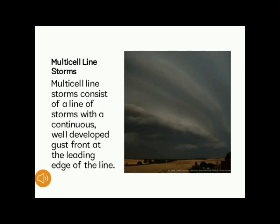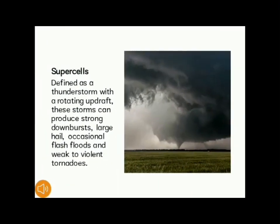Multi-cell line storm consists of a line of storms with a continuous well-developed gust front at the leading edge, also known as a squall line. This storm can produce small to moderate-sized hail, occasional flash floods, and weak tornadoes. The last type is a supercell, defined as a thunderstorm with a rotating updraft. This storm can produce strong downbursts, large hail, occasional flash floods, and weak to violent tornadoes.